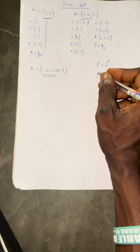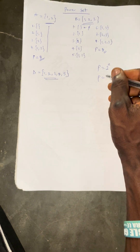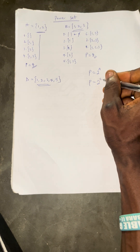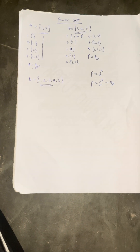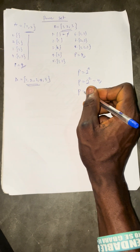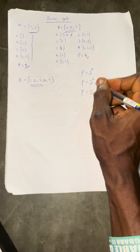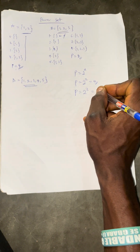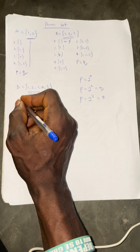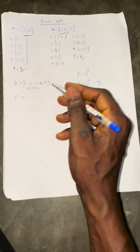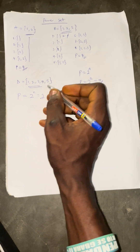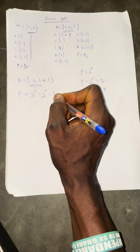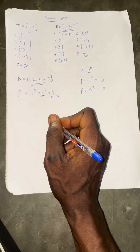For the first example, the power set equals 2 raised to power 2, because there are just 2 elements. 2 raised to power 2 equals 4 — that is why the power set is 4. For the second example, the power set is 2 raised to power 3, which equals 8. Now for set D, the number of elements is 5, so the power set is 2 raised to power 5, which equals 32. The number of subsets here is 32.